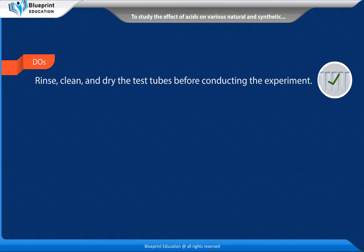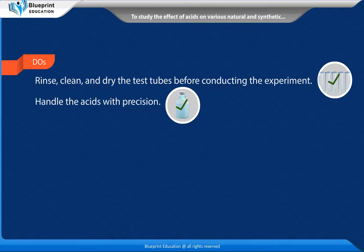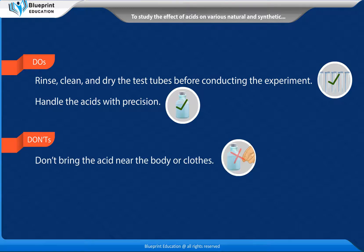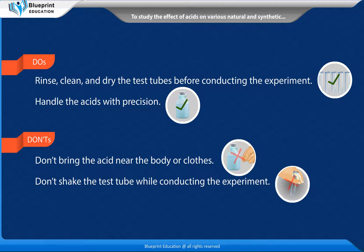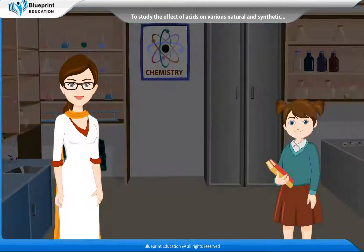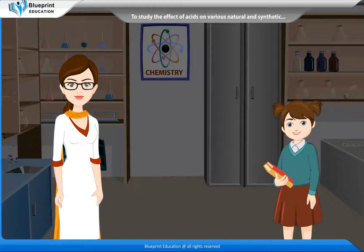Dos: Rinse, clean, and dry the test tubes before conducting the experiment. Handle the acids with precision. Don'ts: Don't bring the acid near the body or clothes. Don't shake the test tube while conducting the experiment.